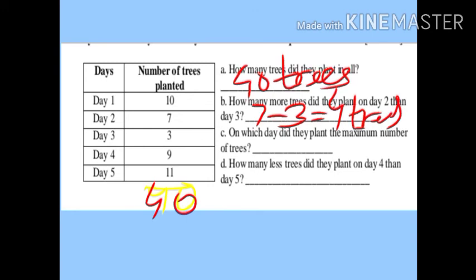Third question: on which day did they plant the maximum number of trees? Look at the data — the biggest number is 11. The question asks for the day, not the number of trees. So the answer is Day 5.